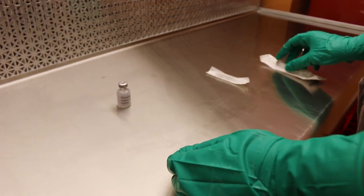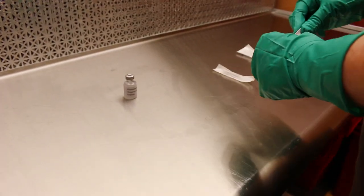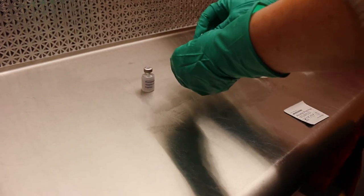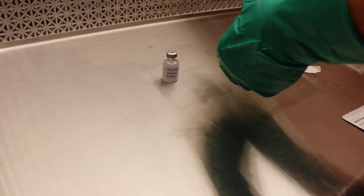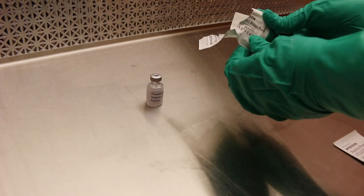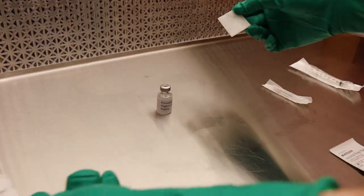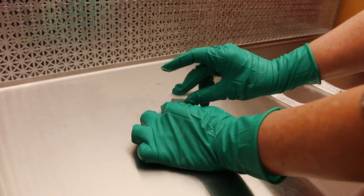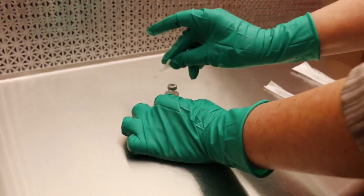Step nine, pick up an alcohol swab and place it in the direct compounding area. Open and discard the swab package in the discard pile, and swab the top of the vial, then place the used swab in the discard pile.